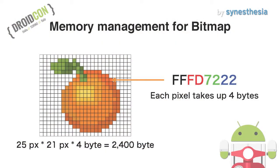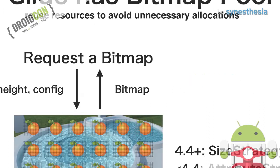Bitmap pool. Each pixel takes up 4 bytes and bitmaps consume a lot of memory. Allocating memory every time to transform images is not efficient. So Glide has a Bitmap pool — bitmaps are reused to avoid unnecessary allocations. Bitmap pool works efficiently if the OS version is KitKat or above, because bitmap management in the Android framework changed from KitKat.